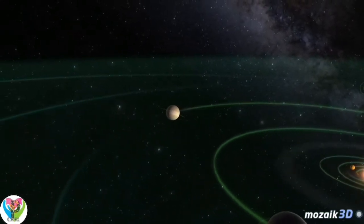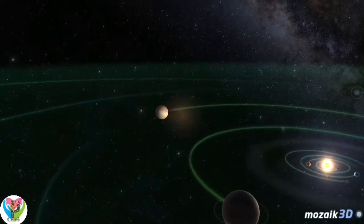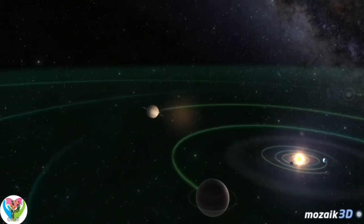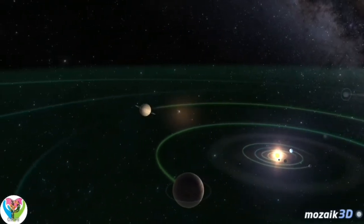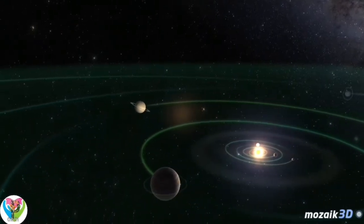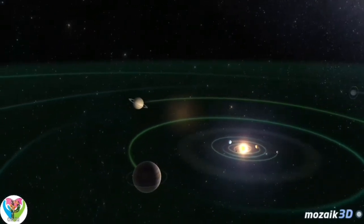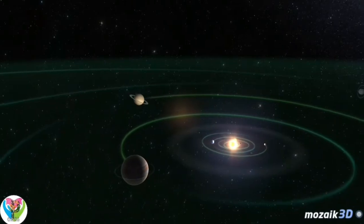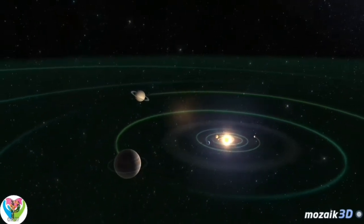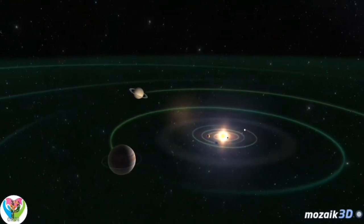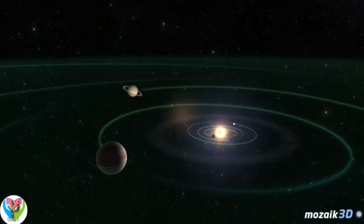Planets are kept in orbit by the gravity of the Sun. The mass of the Sun is 750 times larger than the total mass of the planets. There is also gravitational force between the planets. Therefore, they influence each other's motion. As a result, their orbits might undergo slow, minor changes.